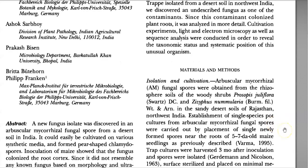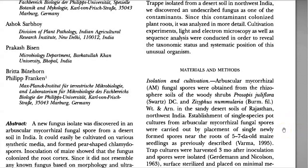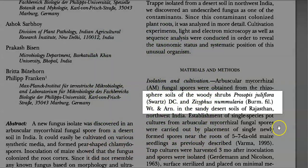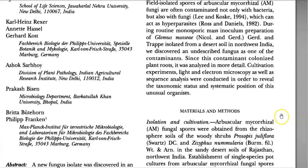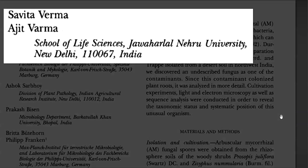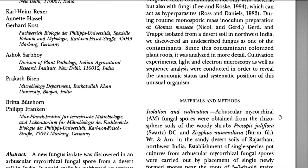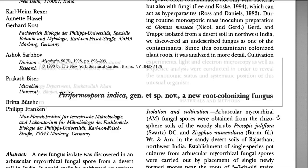Piriformospora indica was first isolated from Prosopis juliflora as well as Ziziphus species. Prosopis juliflora is a common plant found in the Indian region. It was isolated from sandy desert soils of Rajasthan by an Indian author named Ajit Verma as well as Savita Verma, who first isolated this particular organism and named it Piriformospora indica.